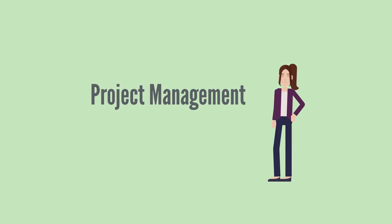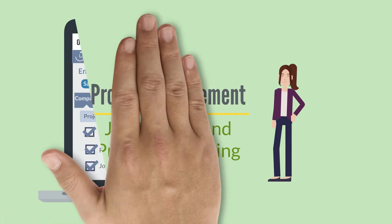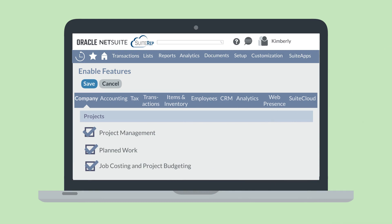One project management feature in NetSuite is the Job Costing and Project Budgeting feature. This feature can be turned on in the Project section of the Company tab in Enable Features. Let's take a look at how this feature affects projects in NetSuite.